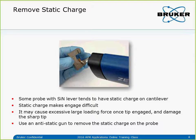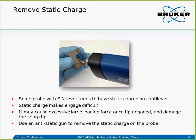You will see the cantilever deflection signal keeps changing, making engagement very difficult. If it does engage, the static charge may dissipate, causing the force loaded on the probe to be much higher than expected. This will damage the sharp tip and if the force is too strong we cannot get atomic resolution. So we need to remove this static charge. A good way is to use an anti-static gun — hold the holder, point at the cantilever, and squeeze the trigger a few times. This very effectively removes the static charge. The anti-static gun is inexpensive — you can find it on Amazon for less than a hundred dollars. If the sample also has static charge, you can use it to discharge that as well.